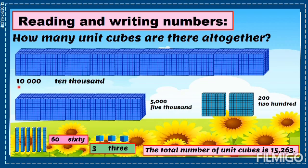The next example: each block here is also composed of 1,000 unit cubes. Let us count: 1,000, 2,000, 3,000, 4,000, 5,000. The total of this one is 5,000, and its word form is five thousand.